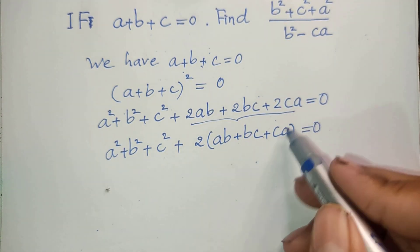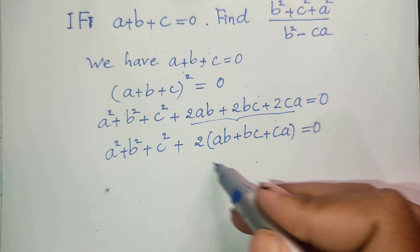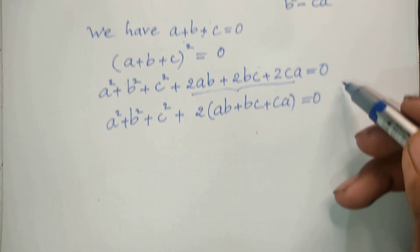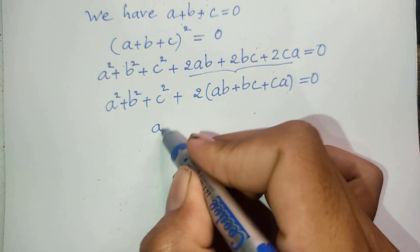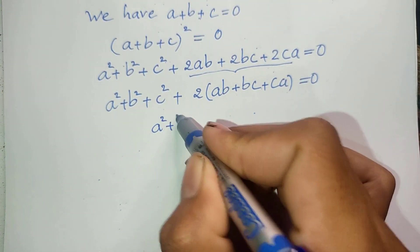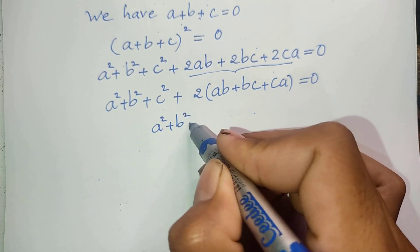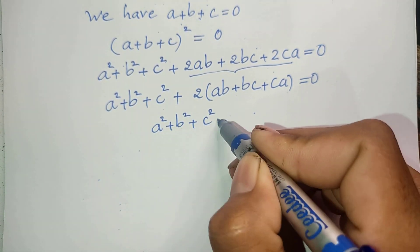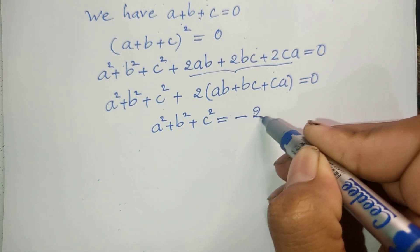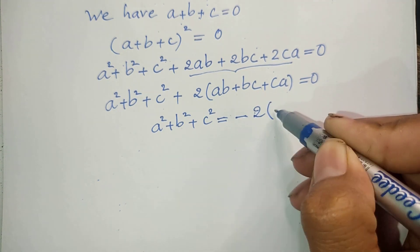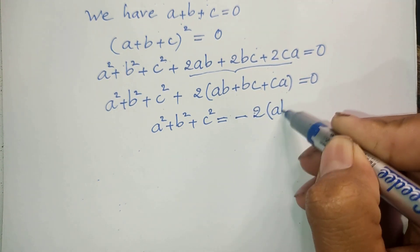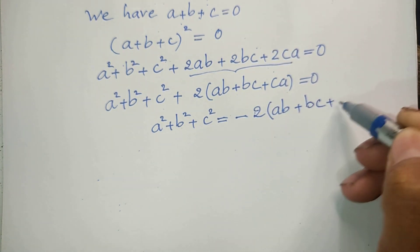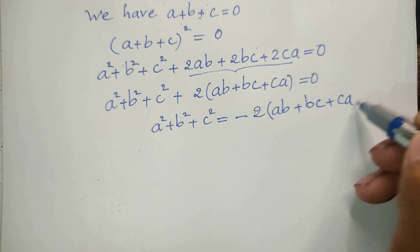Now I move the 2ab plus bc plus ca part to the right-hand side. So I get a squared plus b squared plus c squared equals negative 2 times ab plus bc plus ca.